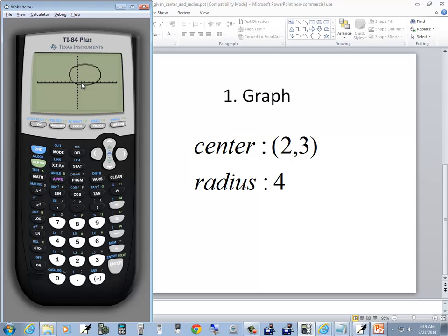And you see your center is 2, 3, which is right here, and it goes out a radius of 4. So that gives you a circle.